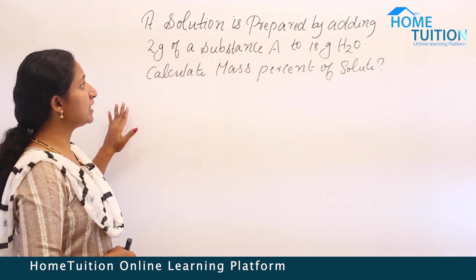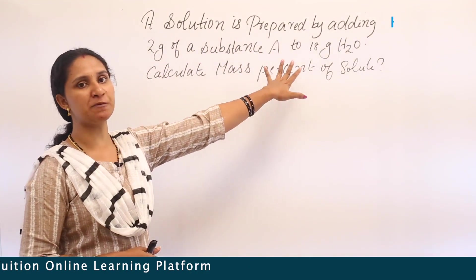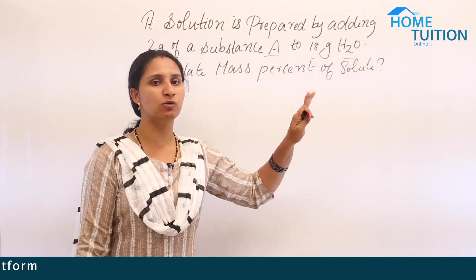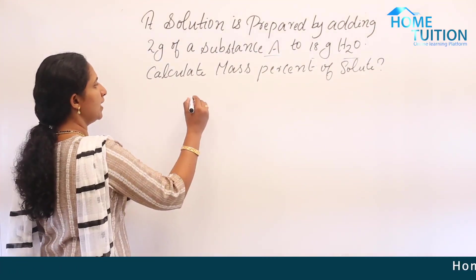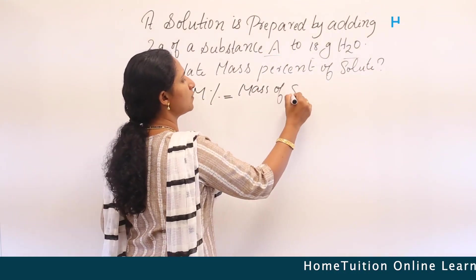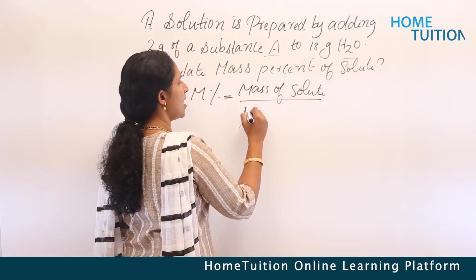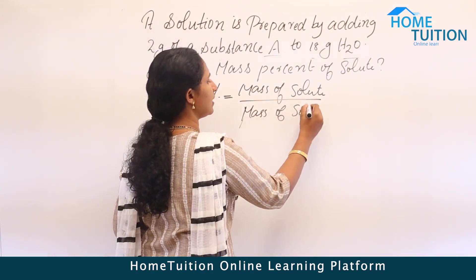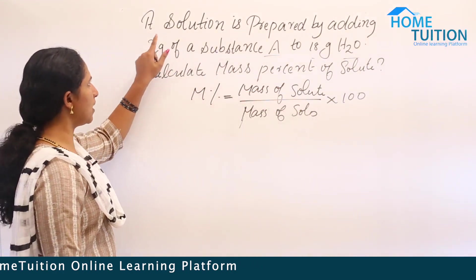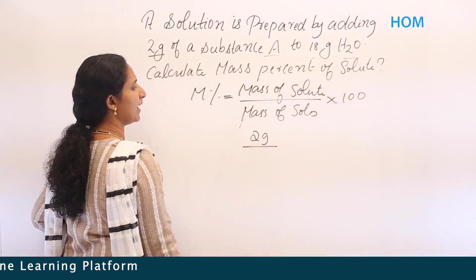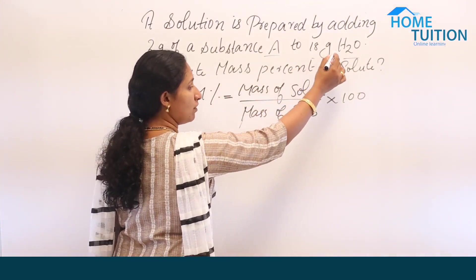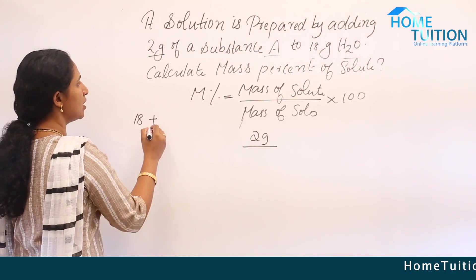Next question: a solution is prepared by adding 2 grams of substance A to 18 grams of water. Calculate the mass percent of the solution. Mass percent equals mass of solute divided by mass of solution, multiplied by 100. Here, mass of solute is 2 grams, and mass of water (solvent) is 18 grams.